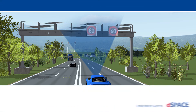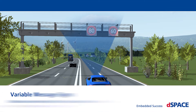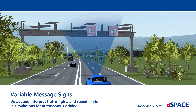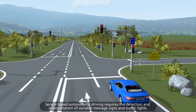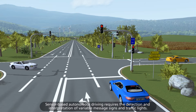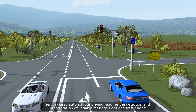Variable Message Signs: detect and interpret traffic lights and speed limits in simulations for autonomous driving. Sensor-based autonomous driving requires the detection and interpretation of variable message signs and traffic lights.